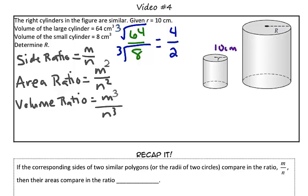So, the side ratio from the bigger cylinder to the smaller cylinder is 4 over 2, which we can also simplify to 2 over 1 if we wanted to. Now that we have the side ratio, or the ratio of their corresponding parts, we can go ahead and set up a ratio to solve for the missing radius.